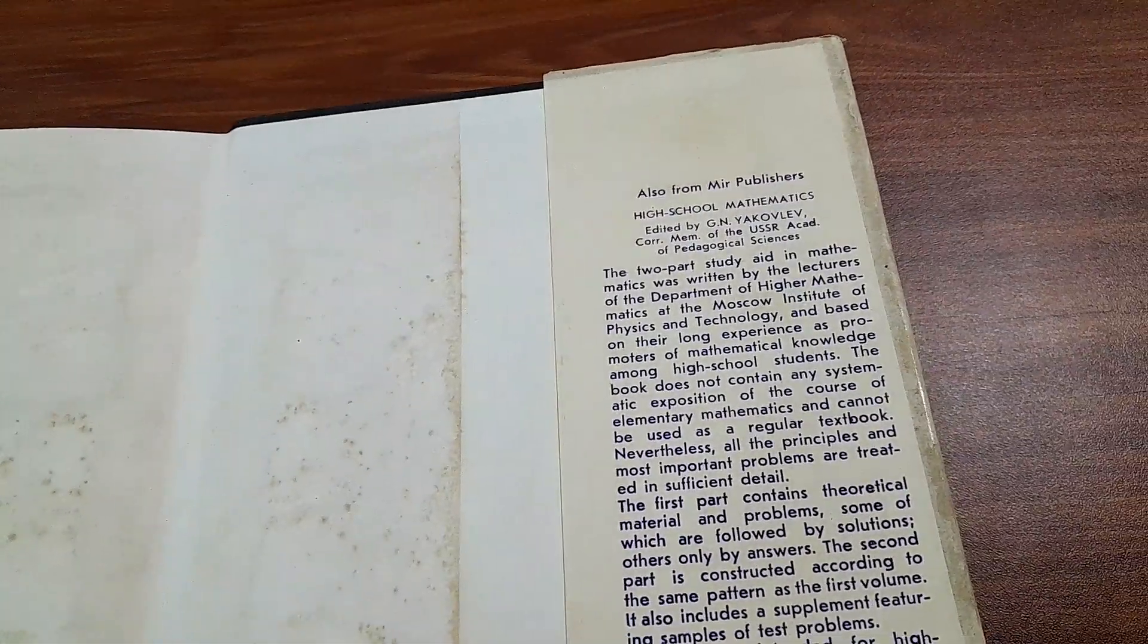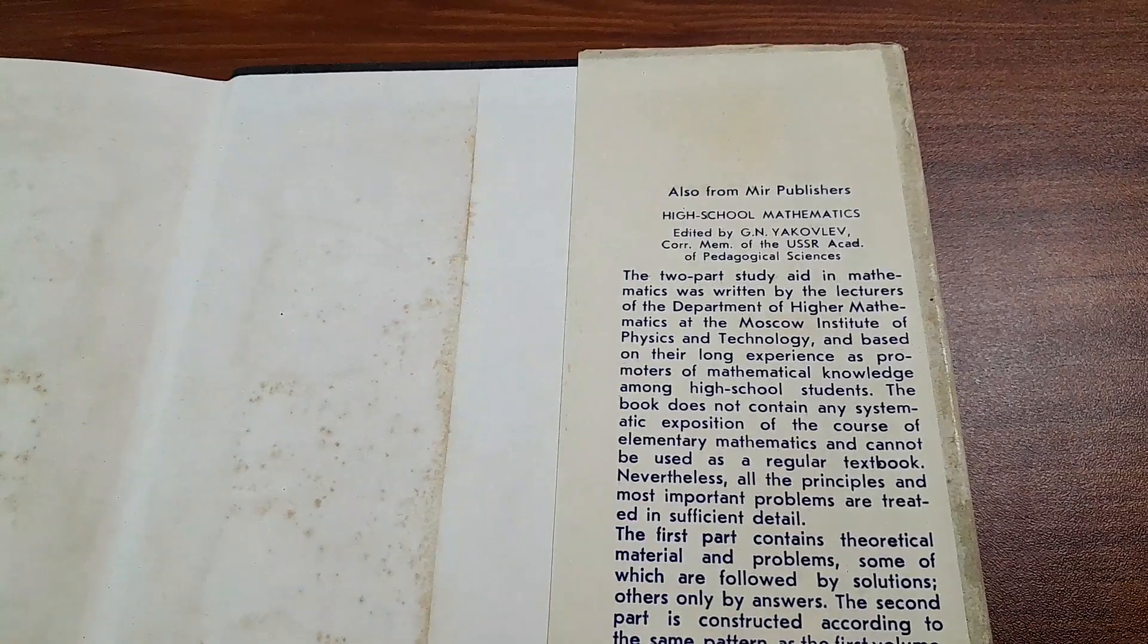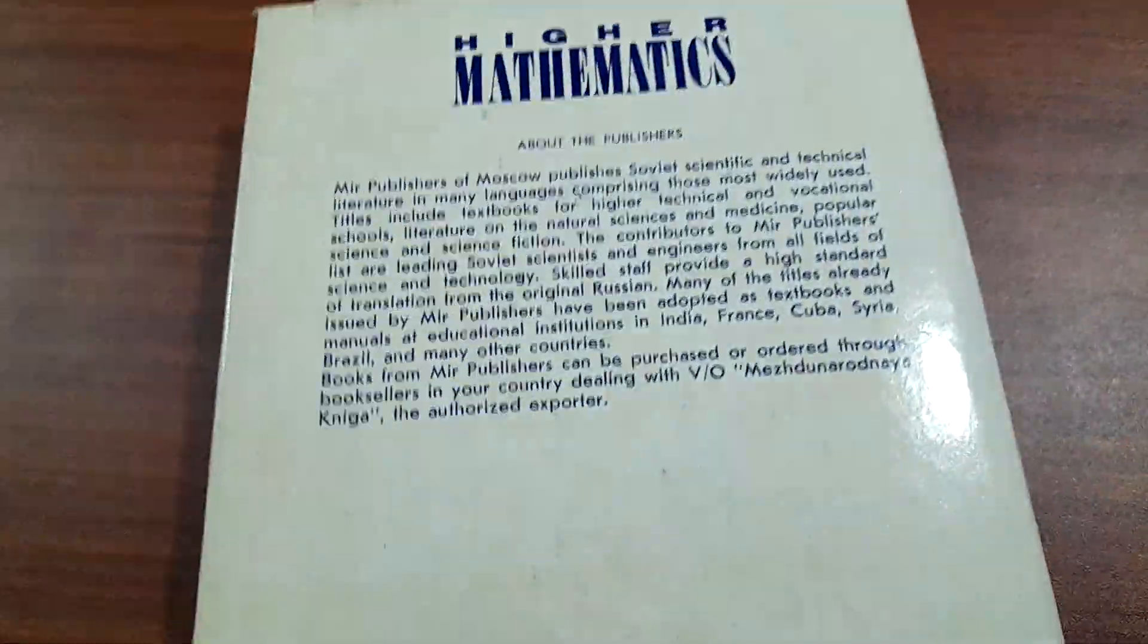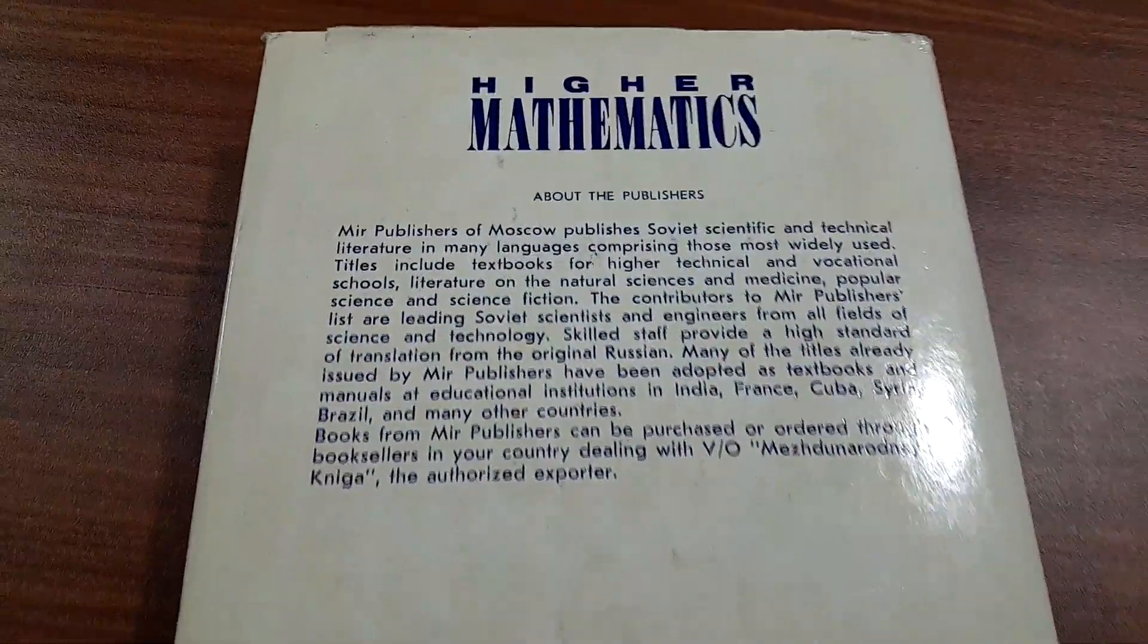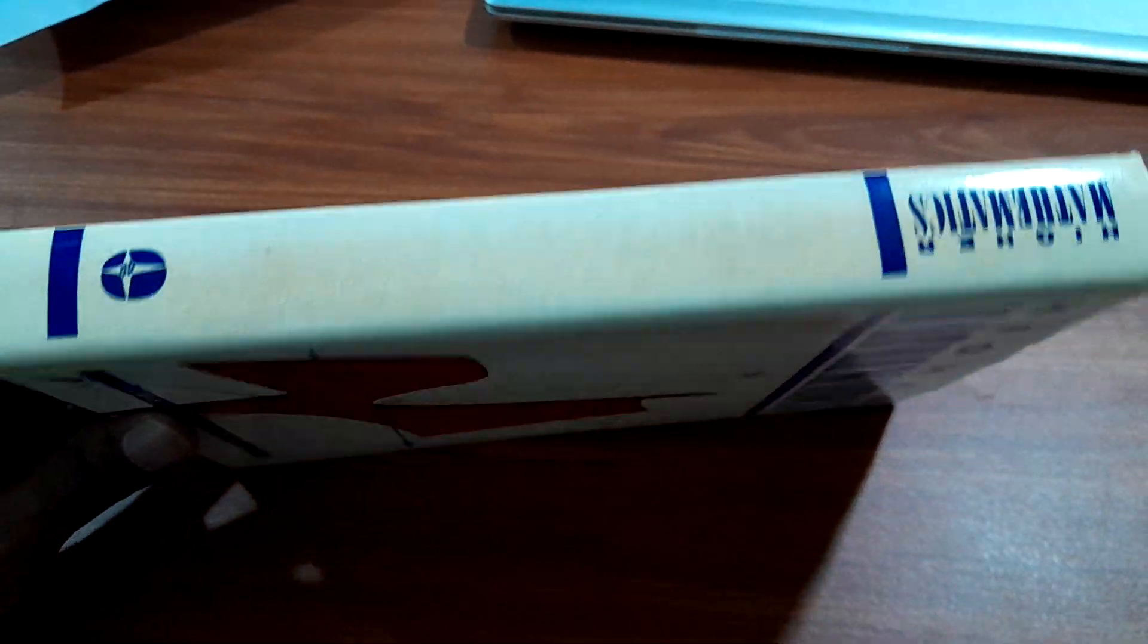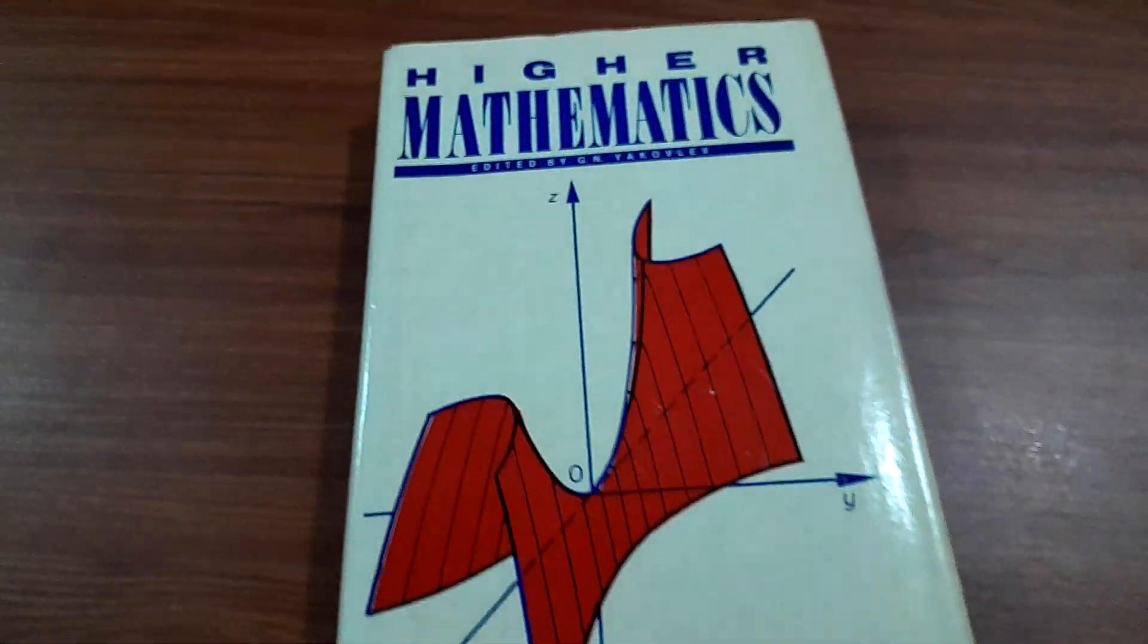That's the end of the book. If you want, you can see they've included information about Mir Publishers. They have given High School Mathematics - this is about the publishers. Because this is from 1990. Thank you for watching, see you in the next video.